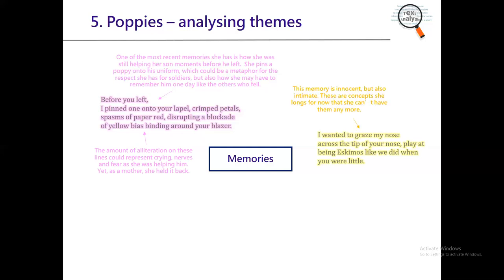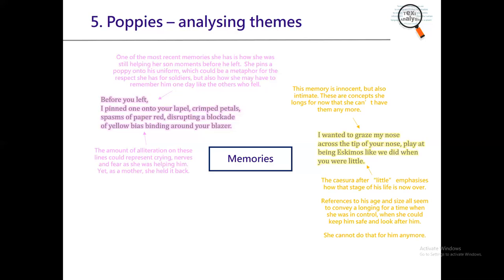Next, the Eskimo kiss. This memory of grazing her nose against his is extremely innocent but also very intimate — the kind of connection between mother and son when the child is still young. These are concepts she really longs for now but can't have anymore. The caesura after 'little' — because it has a full stop within the line — emphasises how that stage of his life, when he was little, is over. We get a sense of finality. References to his age and size all convey a longing for a time when she was in control, when she could keep him safe.